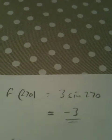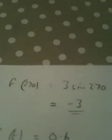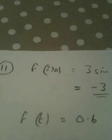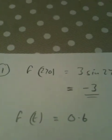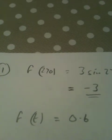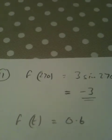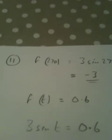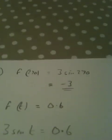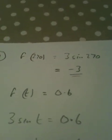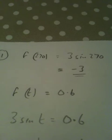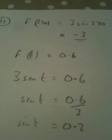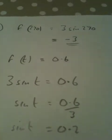Part b, slightly trickier. Says f of t equals 0.6. What does f of t mean? Well, f of x equals 3 sin x, so f of t will be 3 sin t, and it's telling us that that equals 0.6. So it's basically a trig equations question.